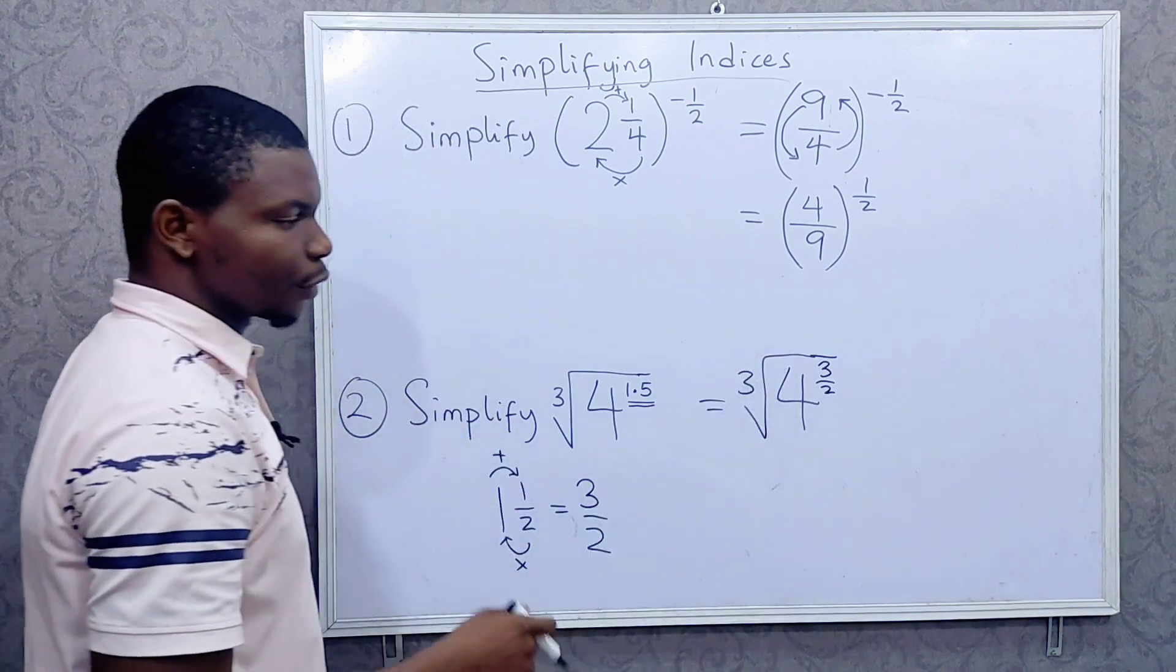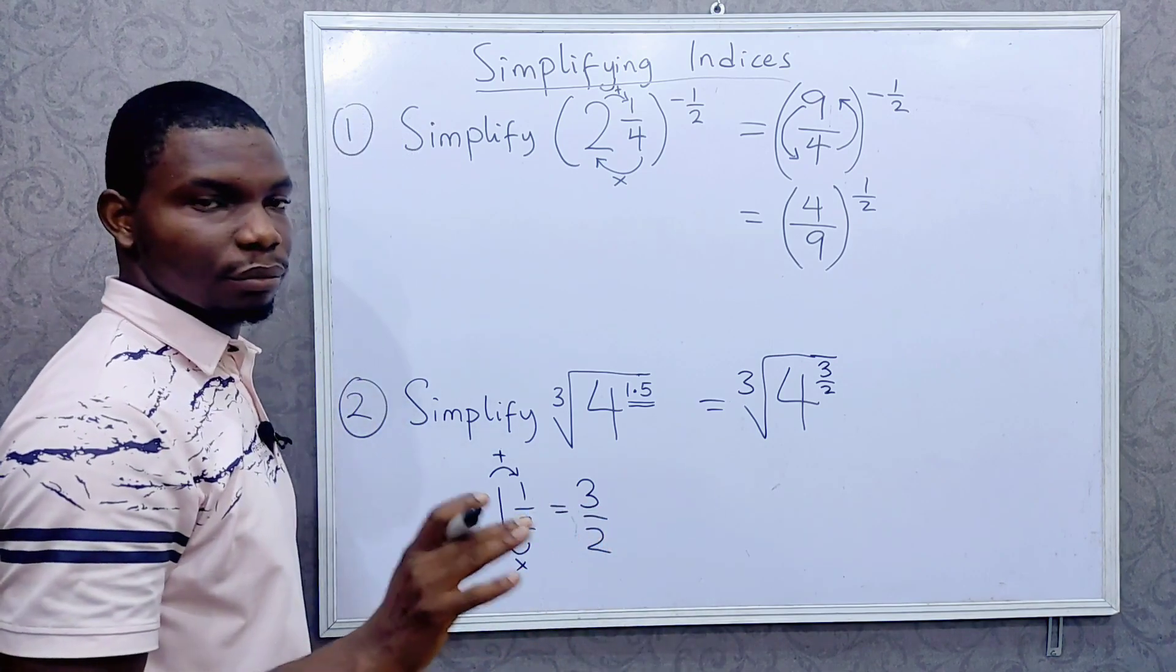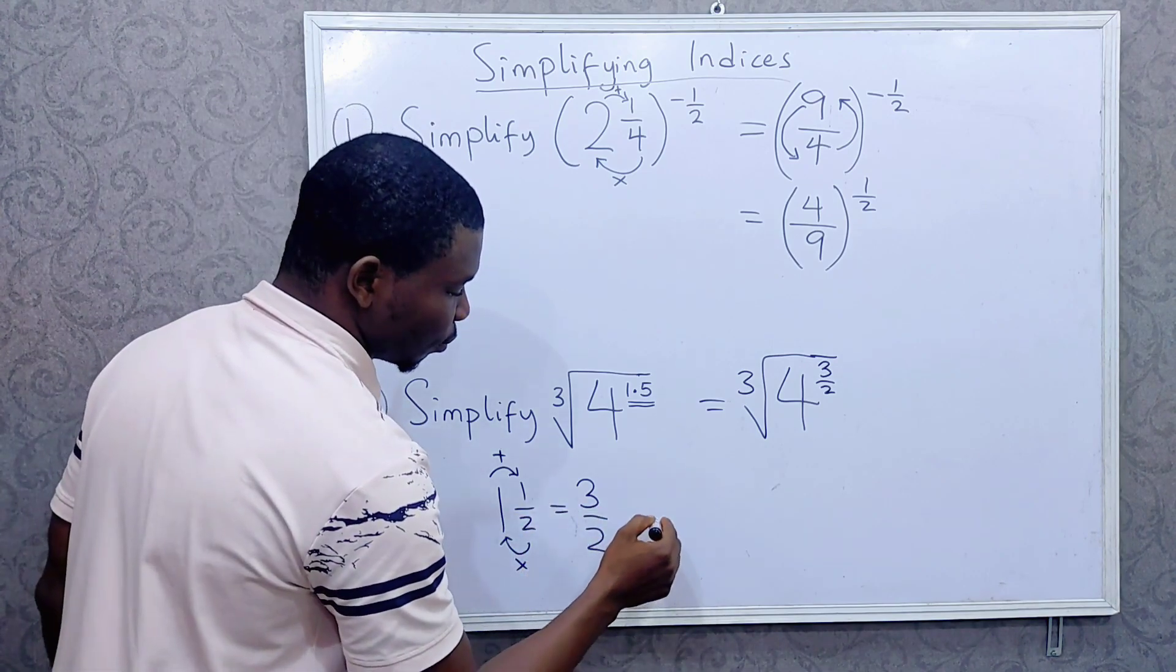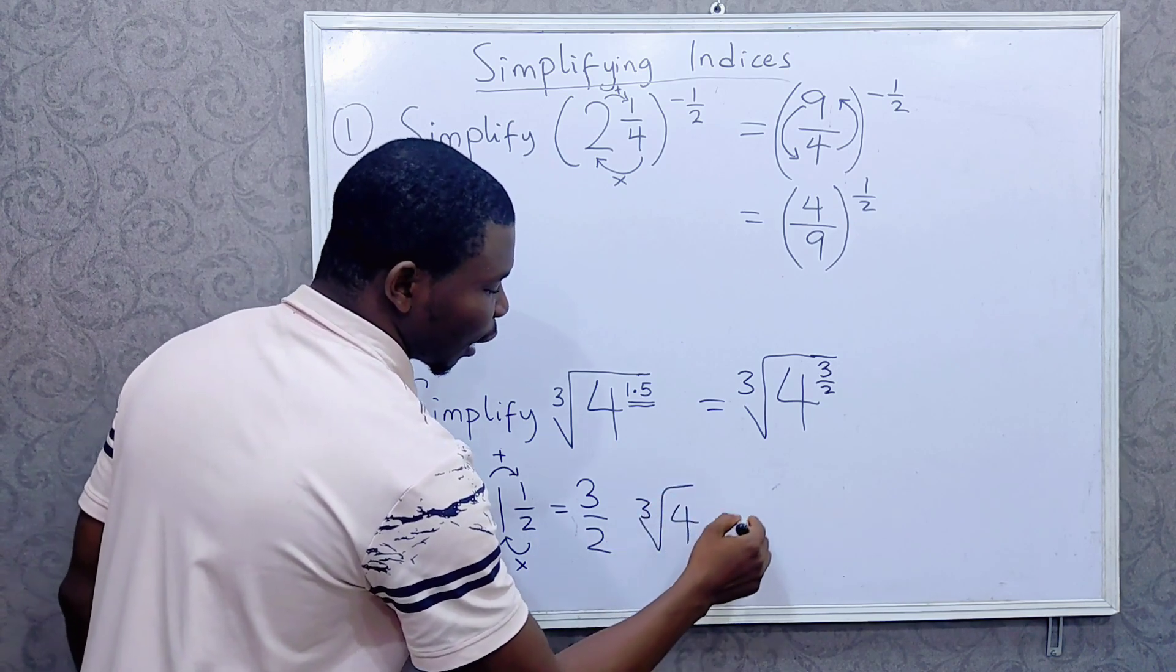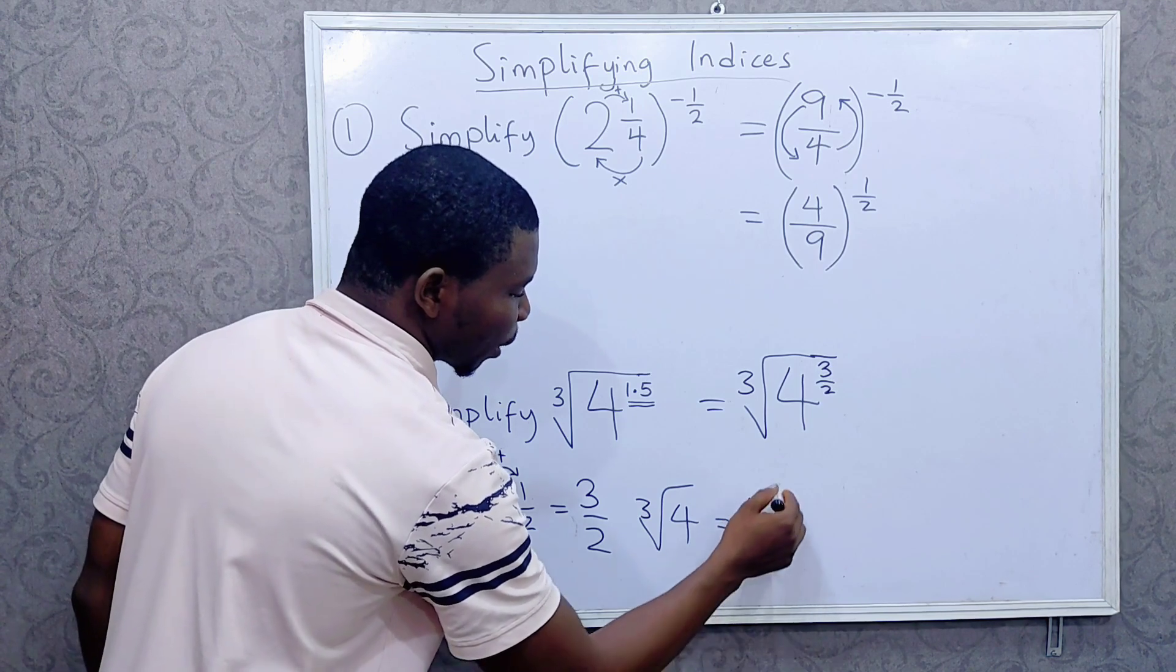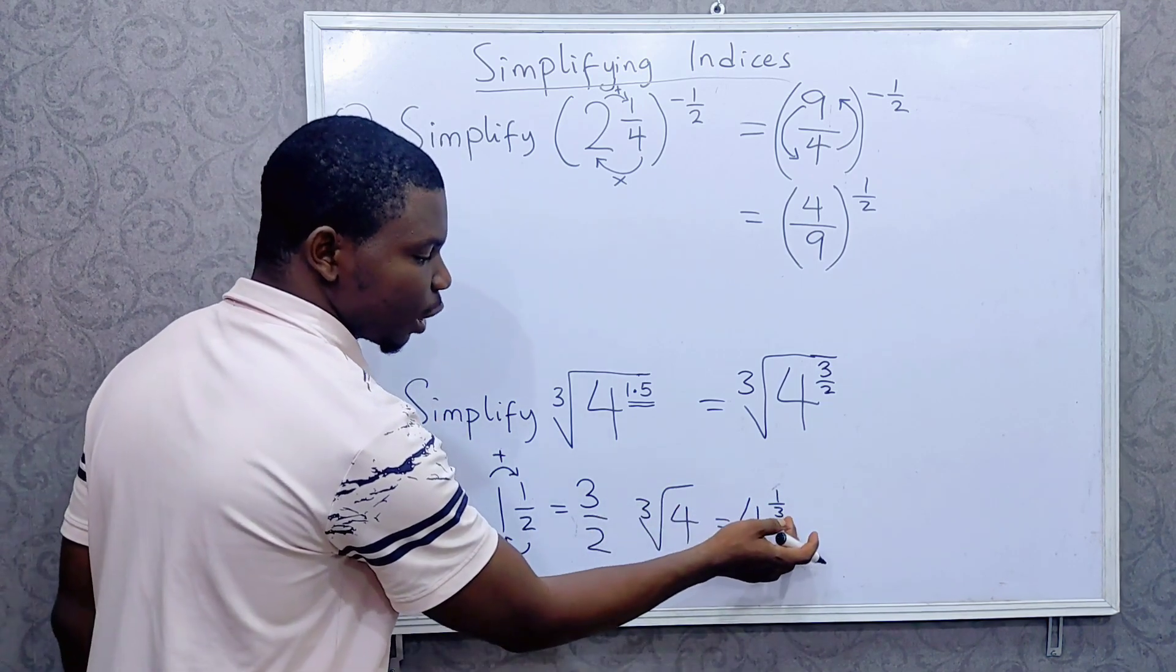Now, cube root. Cube root. If you are writing it as a power, like maybe you have cube root of 4, how you write this would be 4 raised to power 1 over 3. This cube root, another way to write it is 1 over 3.